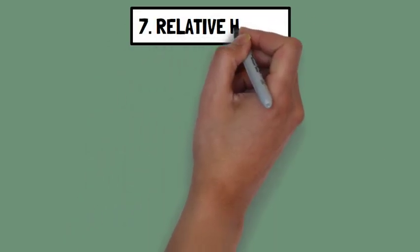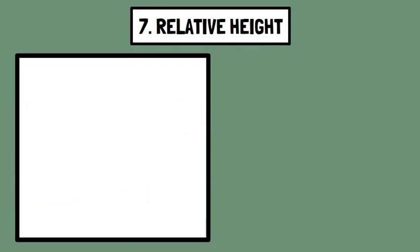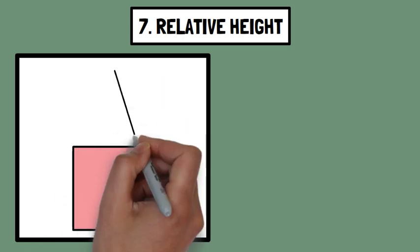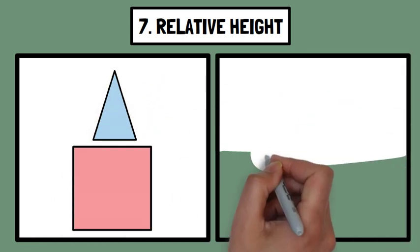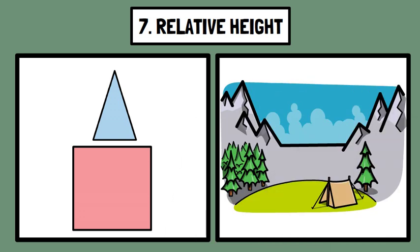Number seven, relative height. Objects positioned higher in a visual field are often perceived as being farther away. For example, in a landscape painting, mountains higher up in the canvas appear farther away compared to objects lower in the canvas such as houses or trees.